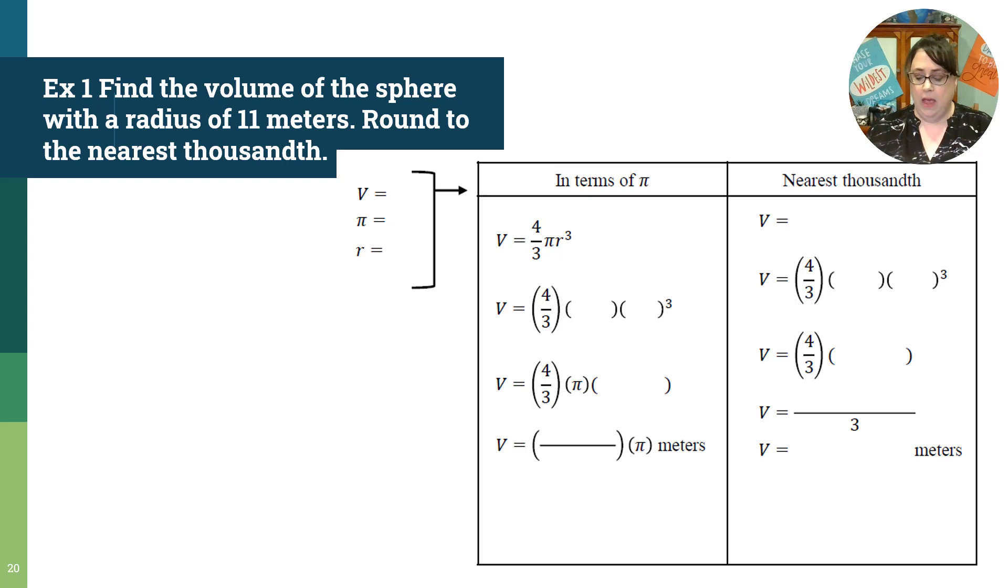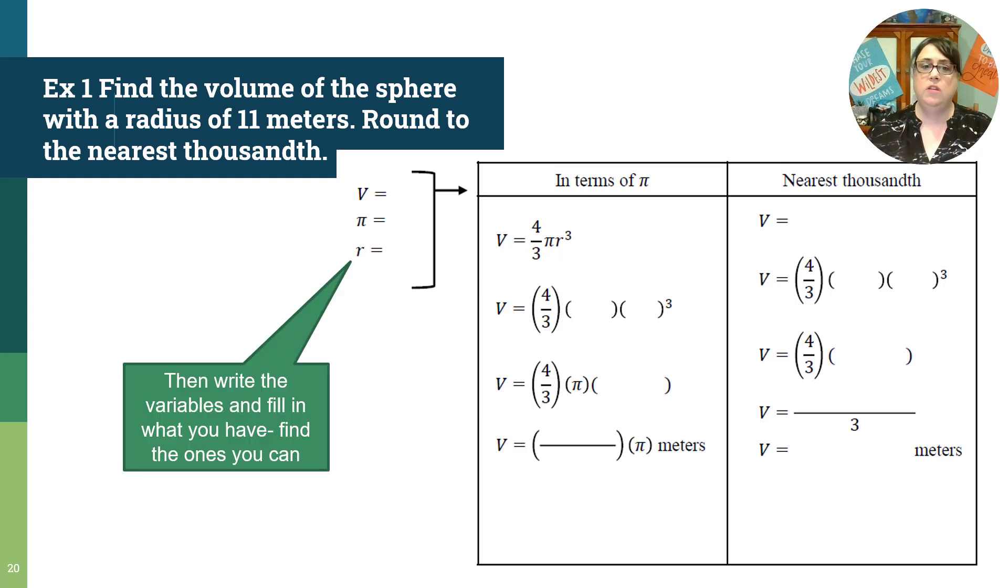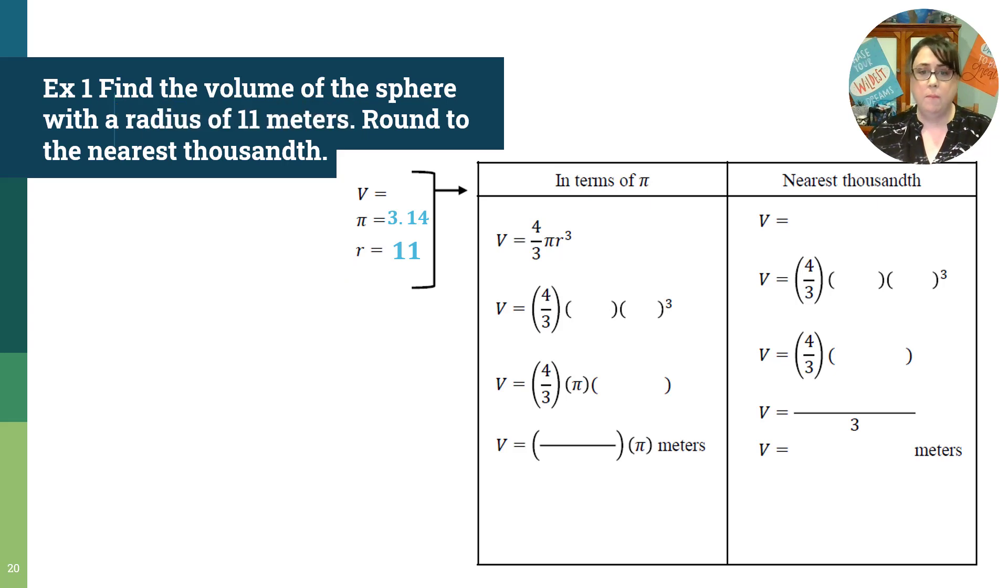Write down anything that we know so we can continue to think about it and not have to recall what else we thought about. After you've written that down, write down the variables as well so you have a roadmap. I know that pi is 3.14, the radius is 11 meters. Volume is left blank, but that's okay because that's what I'm looking for.